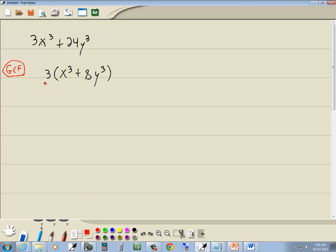Second method is grouping. That's for 4 or more terms, doesn't fit. PST and key number, 3 terms, doesn't fit. Difference of squares, difference of cubes, both 2 terms with a minus between them, doesn't fit.